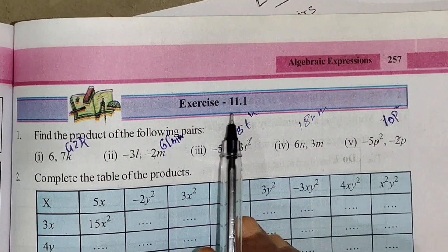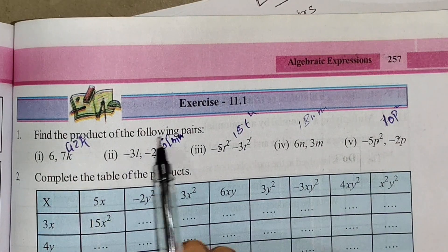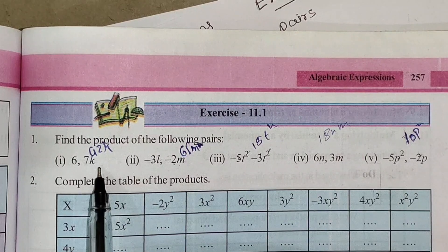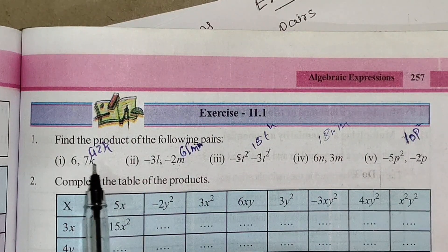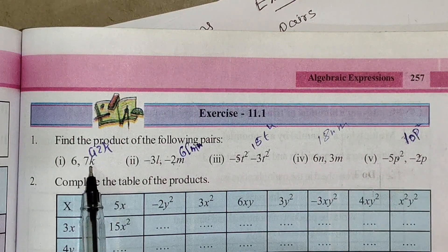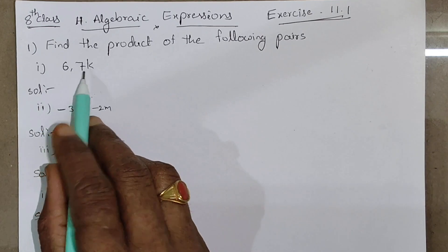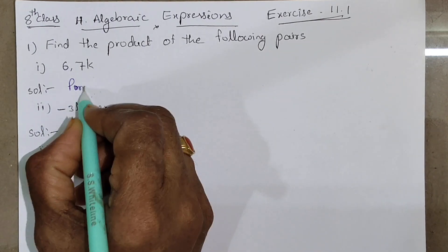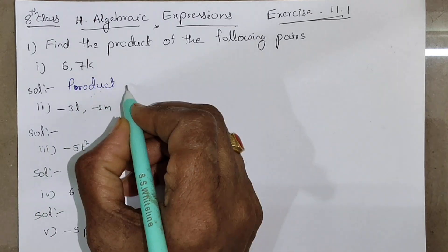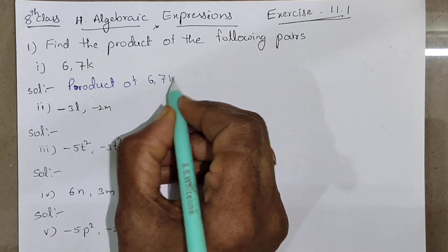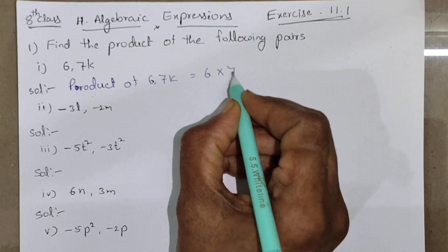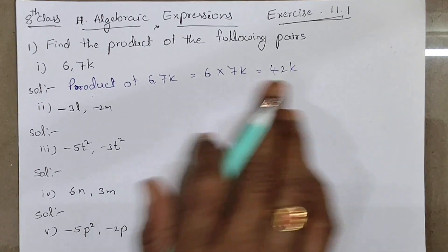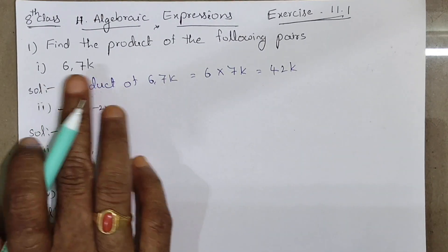Here Exercise 11.1, first question: find the product of the following pairs. First one: 6 and 7k. Product of 6 and 7k is equal to 6 into 7k. Six sevens are 42k. This is the product of these two.